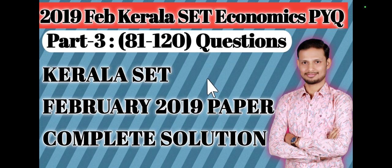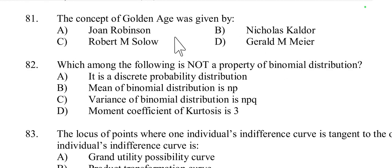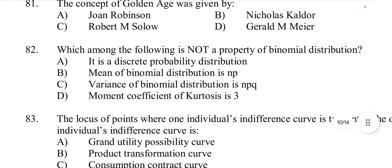Let's start today's video, part number three. Question number 81: The concept of golden age was given by Joan Robinson, Kaldor, Solow, or Meade. The concept of golden age was given by Mrs. Joan Robinson.